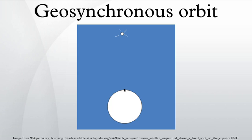Such orbits are useful for telecommunications satellites. A perfectly stable geostationary orbit is an ideal that can only be approximated. In practice the satellite drifts out of this orbit because of perturbations such as the solar wind, radiation pressure, variations in the Earth's gravitational field, and the gravitational effect of the Moon and Sun, and thrusters are used to maintain the orbit in a process known as station keeping.